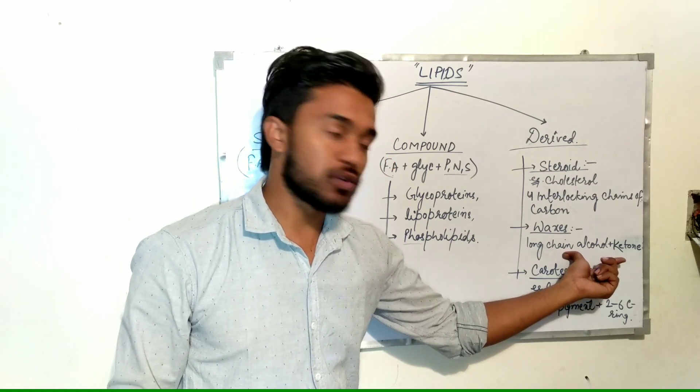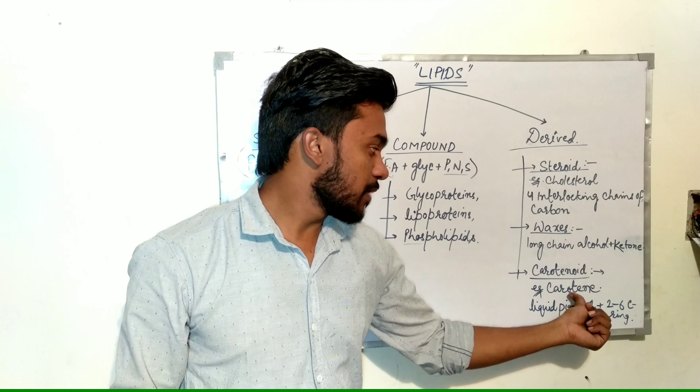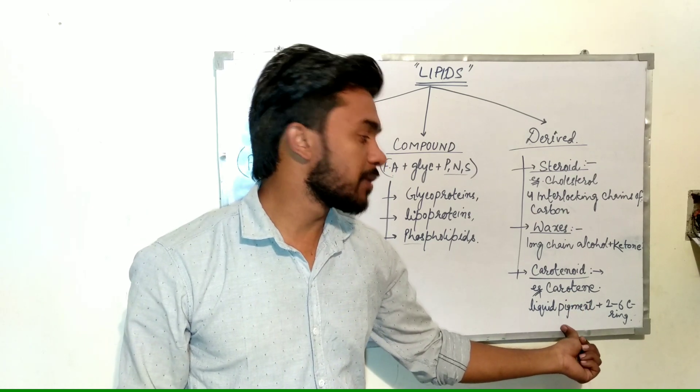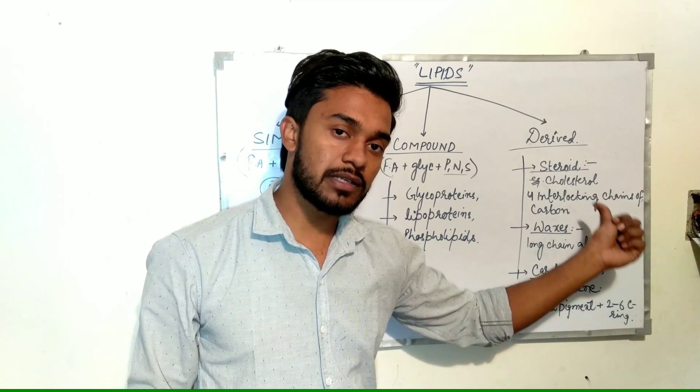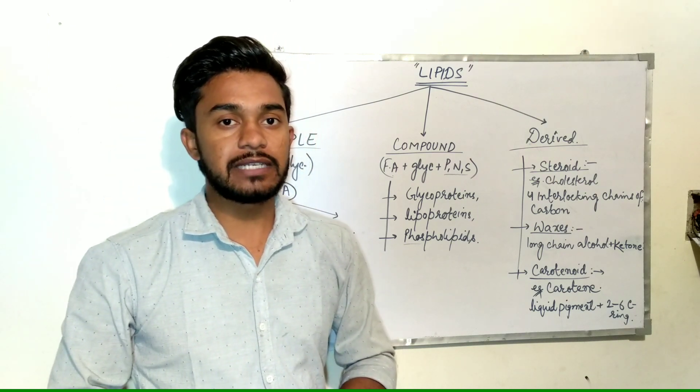Carotenoids, for example carotene, are made up of lipid pigment plus two to six carbon rings. Now we will discuss the role of lipids in body components and other functions.